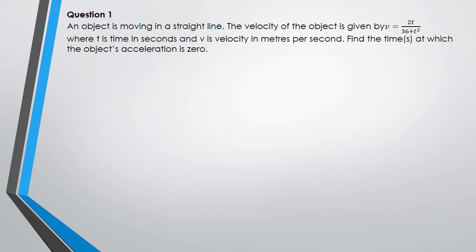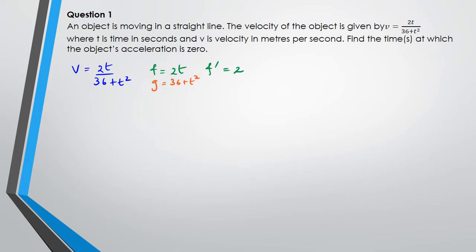Question one: you've got an object moving in a straight line. Velocity is given and you're trying to figure out at what time the acceleration is equal to zero. We're going to differentiate velocity. We've got velocity equals 2t divided by (36 plus t²). I'm going to use the quotient rule, where f equals 2t, so f dash equals 2, and g equals 36 plus t², so g dash equals 2t.